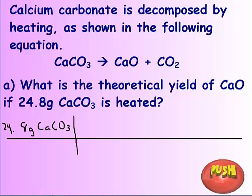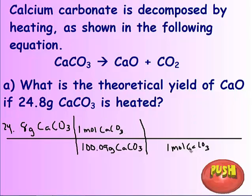So we have our 24.8 grams calcium carbonate. We need to convert that to moles. One mole is 100.09 grams. And then we need our mole-to-mole ratio. In this case, one mole is equal to one mole calcium oxide. You do need that step even though it's a one-to-one ratio.